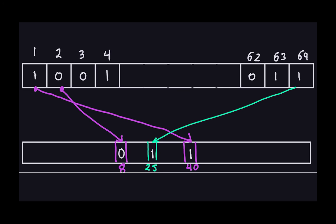That's how the permutation works. If you were to do this by hand, it would take a very long time — it's done by computer. There are two ways to implement this: in software, permutation is not very efficient, but in hardware it's very efficient because it's just routing a wire from one position to another.